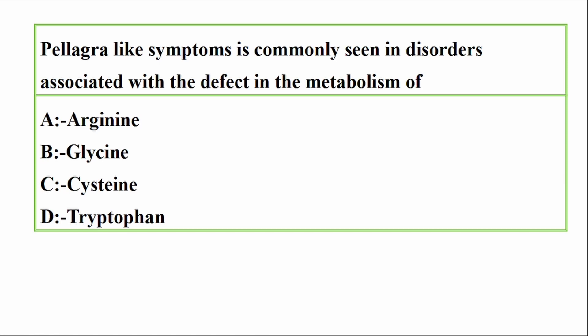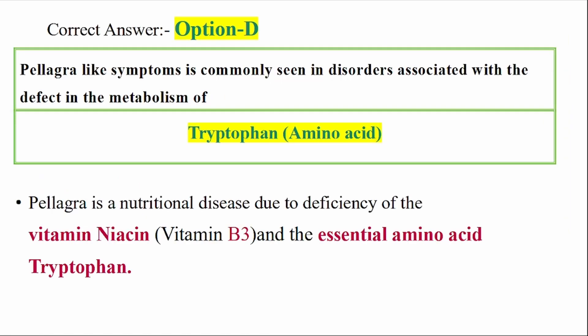Question: Pellagra-like symptoms are commonly seen in disorders associated with a defect in the metabolism of which option? Options: A — Arginine, B — Glycine, C — Cysteine, D — Tryptophan. Correct answer: Option D — Tryptophan.